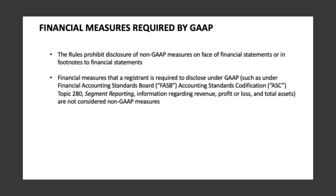Section 4: Financial measures required by GAAP. The rules prohibit disclosure of non-GAAP measures on the face of financial statements or in footnotes to financial statements. Financial measures that a registrant is required to disclose under GAAP, such as under Financial Accounting Standards Board (FASB) Accounting Standards Codification (ASC) Topic 280, Segment Reporting — information regarding revenue, profit or loss, and total assets — are not considered non-GAAP measures.